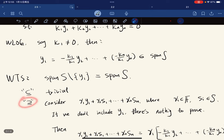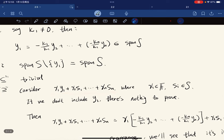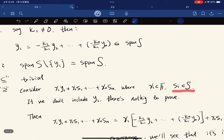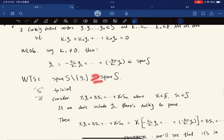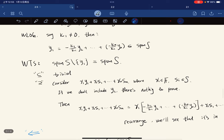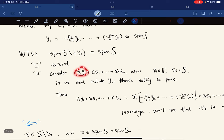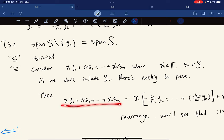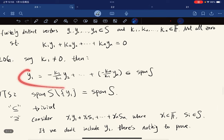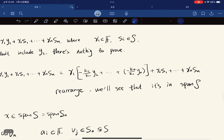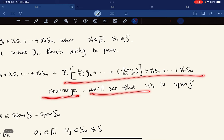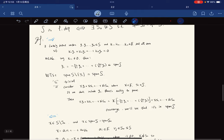For this direction, we consider this where each gamma is in F and S_i are in S. If we don't include Y1, there's nothing to prove. It's basically span S. So we must include Y1. Then we have this linear combination. We do the substitution and then rearrange. We will see that it's in span S. So this direction is done.